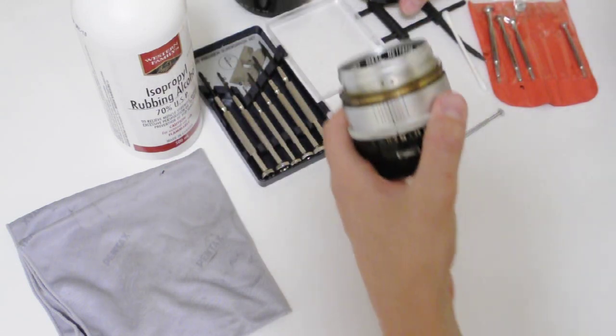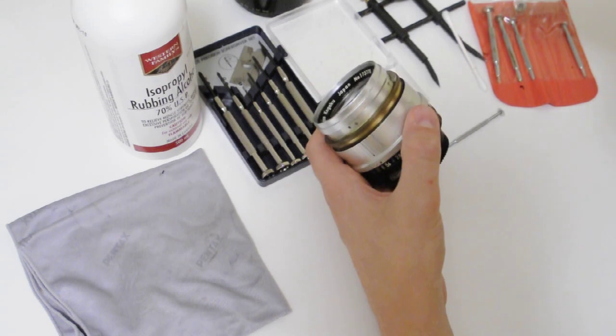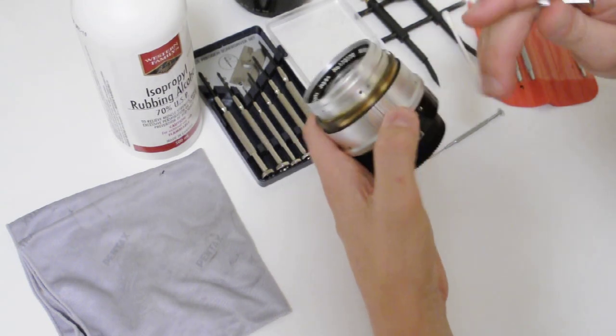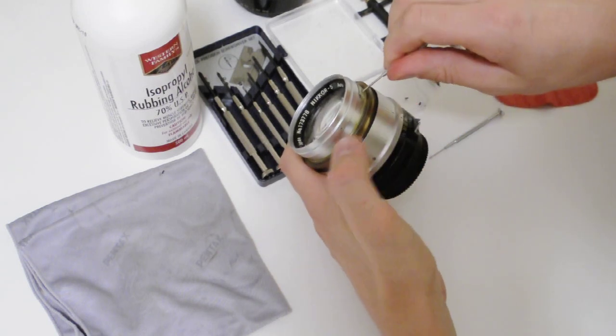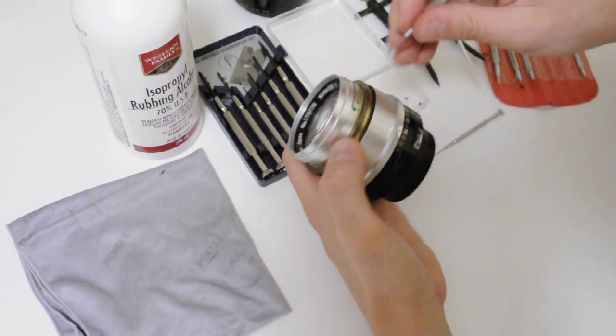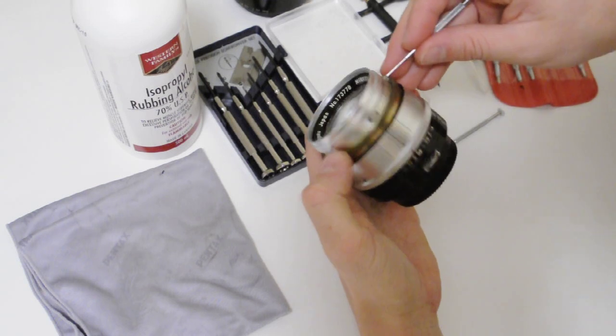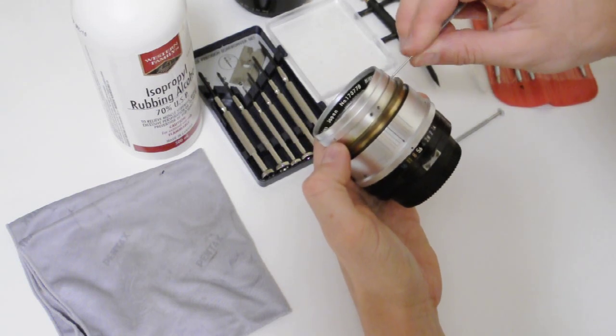Then you have this plate to stop focus. You need to pull this off. There's a little tiny screw here. You don't need to do that one, but you'll need it if you're going to clean fungus in the element.